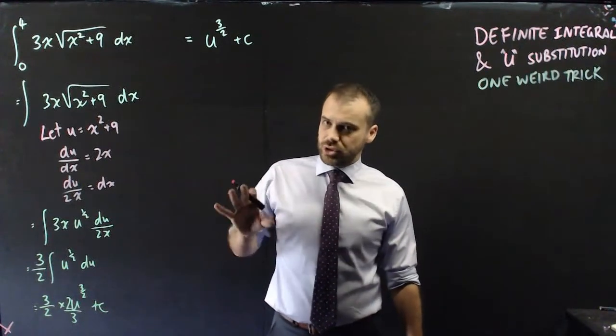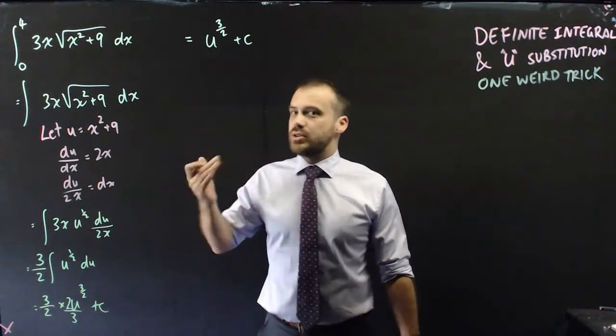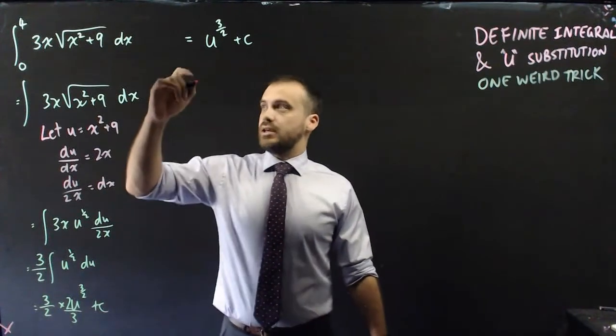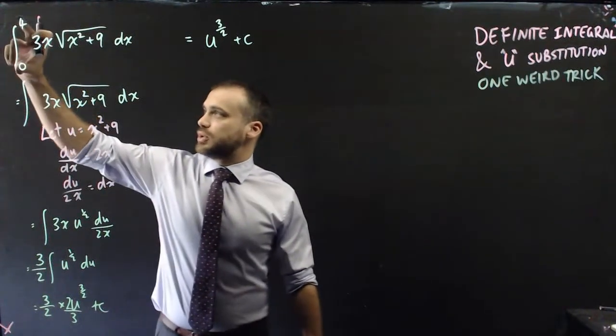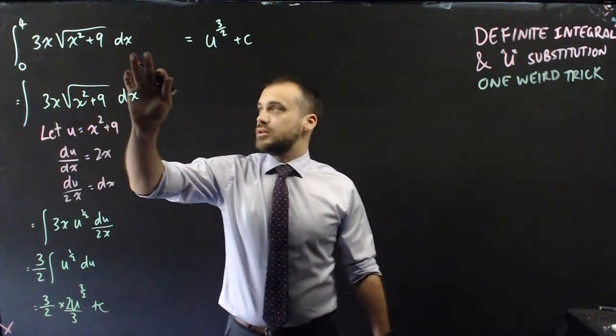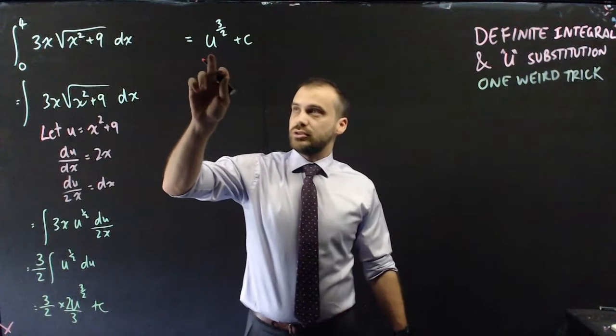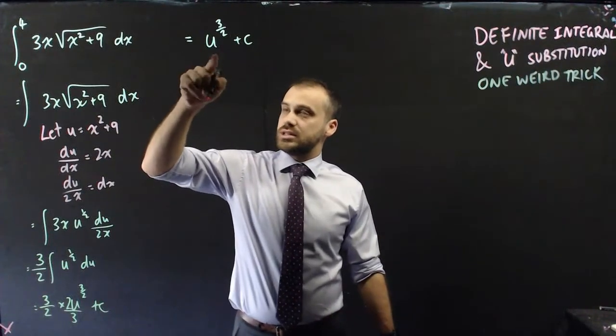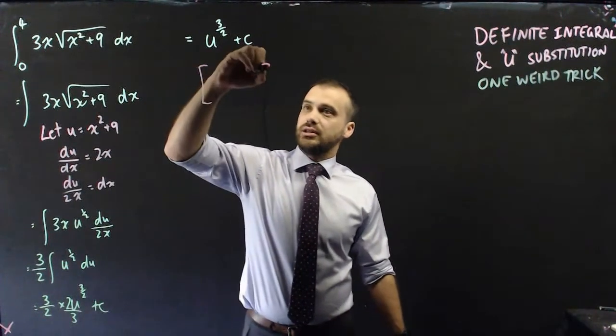Okay, that's something you should already know how to do, and this is where the weird trick comes in. Okay, if we're going to find the integral between 4 and 0 of this, we can find the integral using this value here directly.